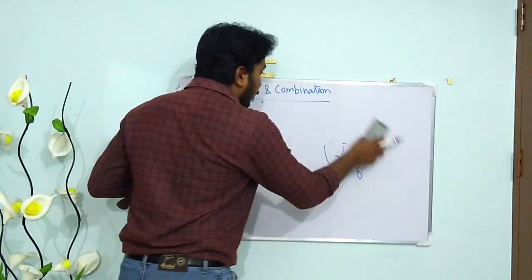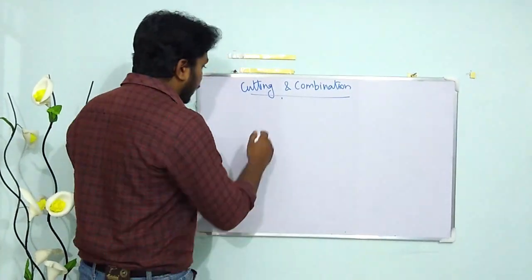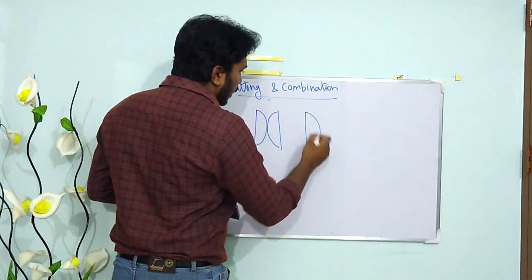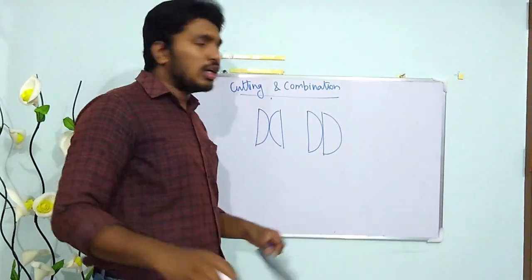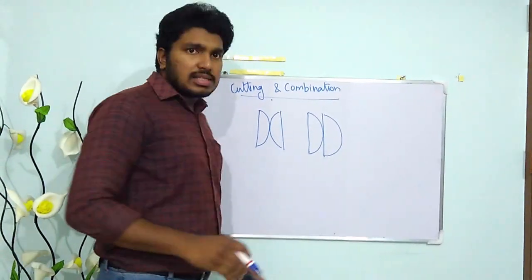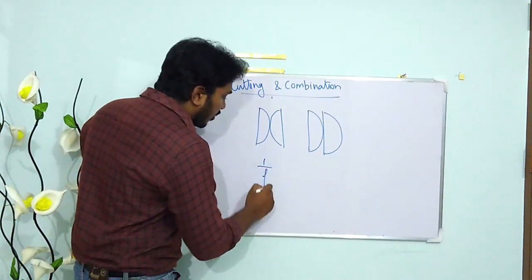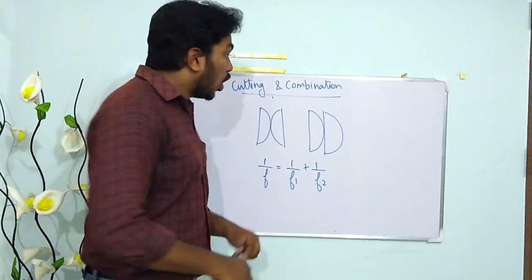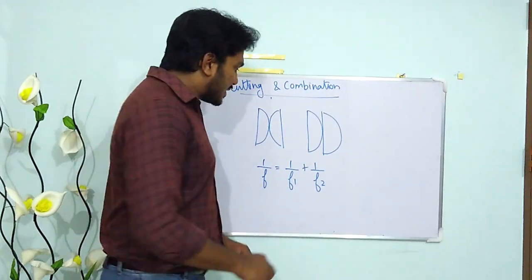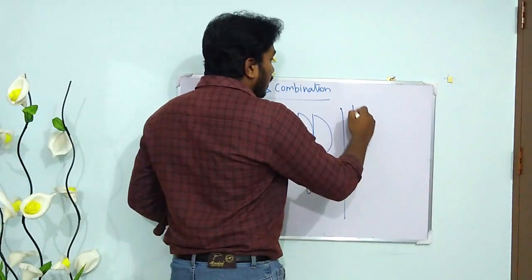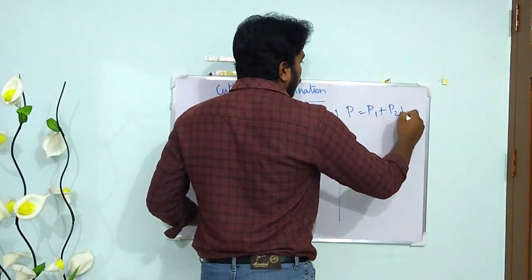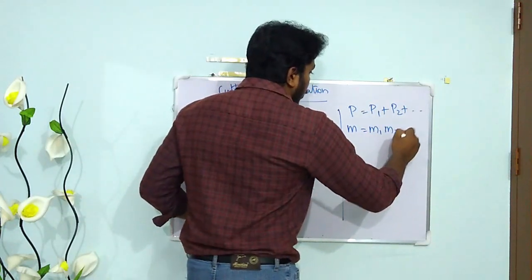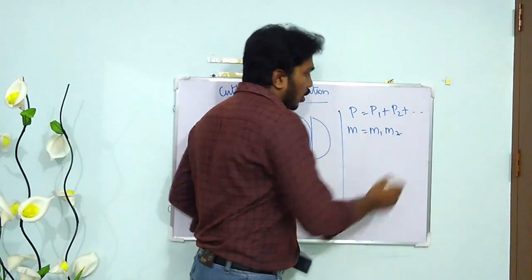When combining two or more lenses in contact, the effective focal length is given by 1/F = 1/F1 + 1/F2 + … + 1/Fn. Since 1/F is the power, the total power P = P1 + P2 + … . The total magnification M = M1 × M2 × M3 × …